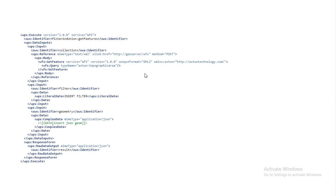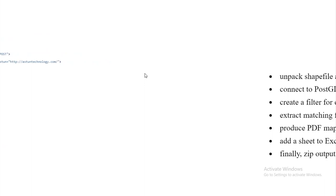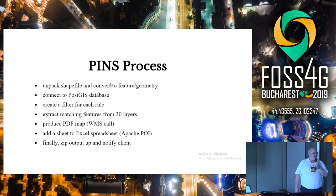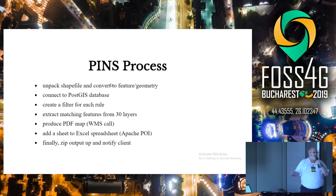It turns out they can do that — that's easy for them. They didn't even have to read the WPS spec; all they had to do was look up how to do an asynchronous AJAX call. For the PINS process — the planning system — it's a bit more tricky. I had to unpack a shapefile, convert it into a feature stroke geometry, connect to the Postgres database, create a filter for each of about 45 separate rules, extract the matching features from the layers, produce a PDF map by calling out to a WMS, and add a sheet to an Excel spreadsheet using Apache POI. Finally, I zipped the whole lot up and notified the client it's ready.